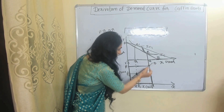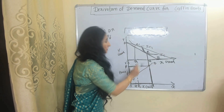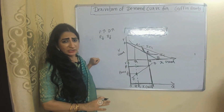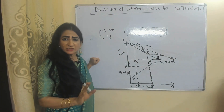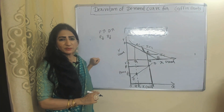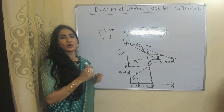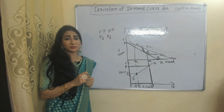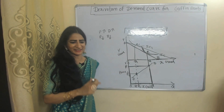When we join these two points, this DD is called the demand curve in case of Giffen goods. So this is all about today's video — I think you got it. Thank you so much for watching. Bye, take care.